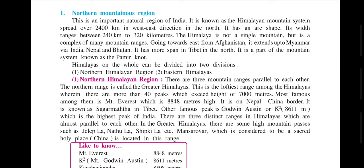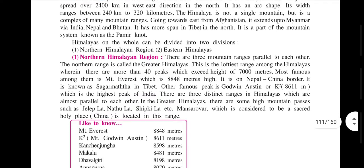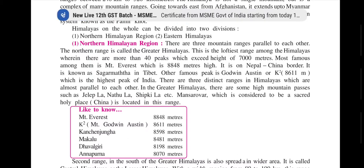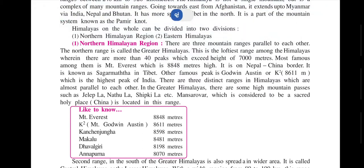The Himalayas are divided into Northern Himalayan Ranges and Eastern Himalayan Ranges. The Northern Himalayan Ranges have three sub-ranges: the Greater Himalayas, the Central or Lesser Himalayas, and the Shivaliks. The Greater Himalayas are higher than 7000 meters, with about 40 peaks. Mount Everest at 8848 meters lies on the Nepal-China border, and K2 (Godwin-Austen) stands at 8611 meters.